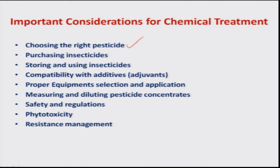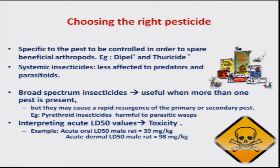The most important one is choosing the right pesticide, purchasing of the insecticide, and knowledge that one should have while storing and using insecticides, information on the compatibility of the adjuvants, proper equipment selection and its application technology, measuring and diluting the pesticide concentrates, safety and regulations, phytotoxicity particularly to the plants, and then resistance management. We will take up one by one and discuss in brief.